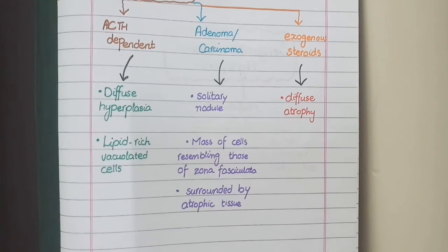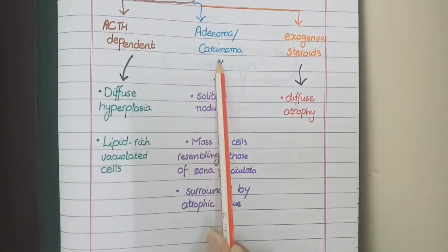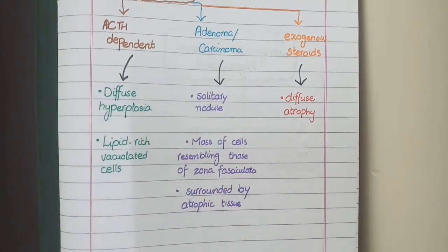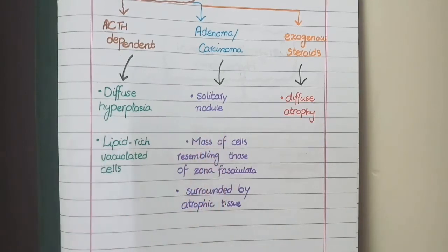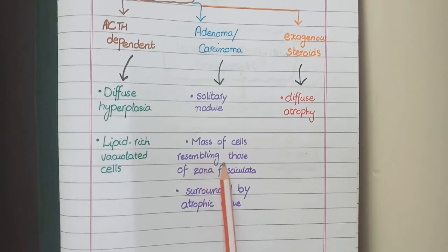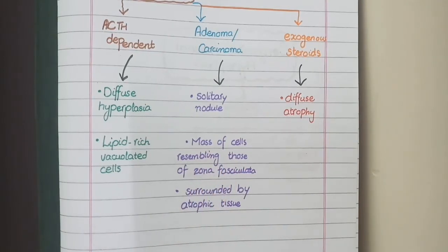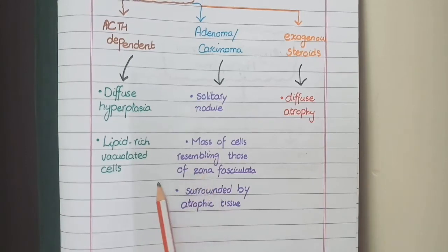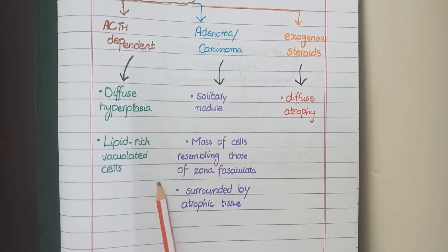If Cushing syndrome is due to an adrenal adenoma or adrenal carcinoma, the adrenal gland will show a solitary nodule. On microscopy, the nodule appears as a mass of cells similar to normal cells of the zona fasciculata — only the quantity of cells changes. As this tumor releases high amounts of steroids, feedback inhibition of ACTH secretion results in a zone of atrophy surrounding the tumor.